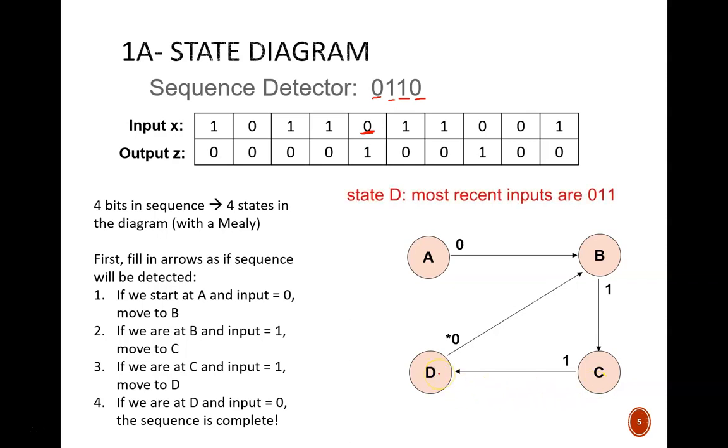State C means that the 2 most recent inputs have been 0, 1. State D means that the 3 most recent inputs have been 0, 1, 1.